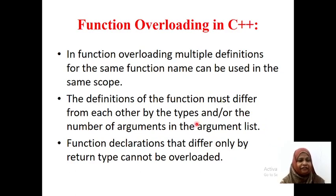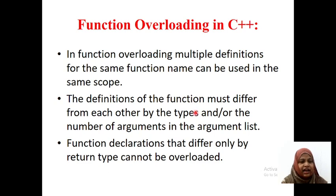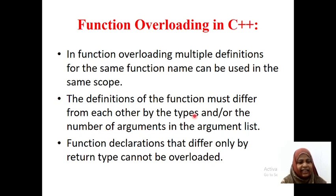In function overloading, multiple definitions for the same function name can be used in the same scope. Function name is same but the parameter list is different. In some cases, the return type is different. In some cases, the parameter list is different. But all those functions must be defined in the same scope — within a particular class or within a particular function. The definition of the function must differ from each other by the type or the number of arguments.